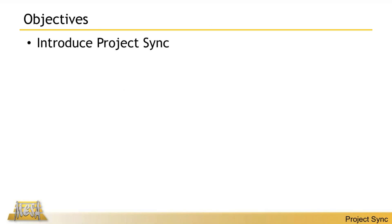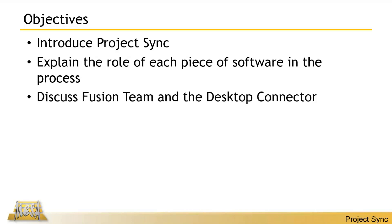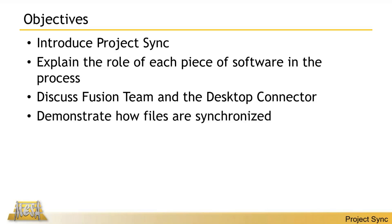My objectives for today: I want to introduce Project Sync — what it is, how it came about, and what its purpose is. We're going to have four main players: Vault Professional, the Job Processor, the Desktop Connector, and the Fusion Team Hub. We'll explain the role of each, introduce Fusion Team and the Desktop Connector if you haven't seen those before, and demonstrate how file synchronization actually works. It's smooth once set up, but there are a couple of dominoes to knock down in the right order.